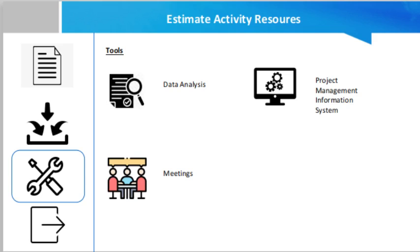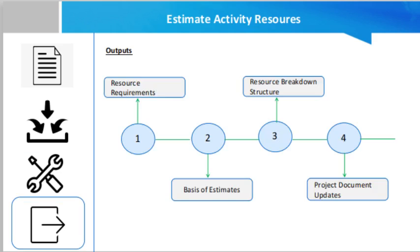Now if we talk about the outputs, the first output is resource requirements. Resource requirements identifies the types and quantities of resources required for each work package or activity in a work package, and can be arranged to determine the estimated resources for each work package.